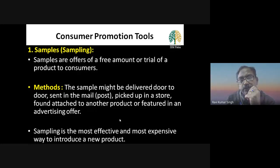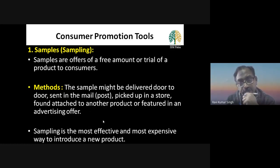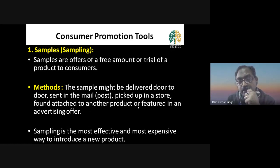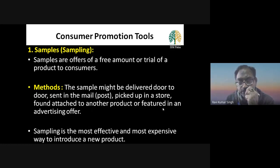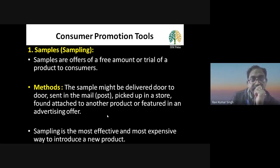Methods of distributing samples include door-to-door delivery, sent through mail or post, picked up at a store, attached to another product — for example, a sample of a new product bundled with an existing product — or distributed through newspapers and magazines. Sampling is the most effective but most expensive way to introduce a new product.